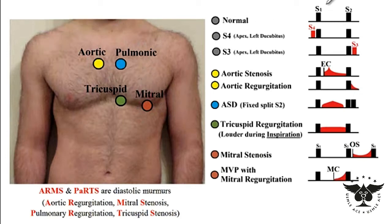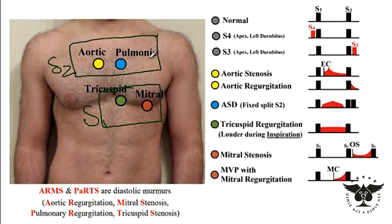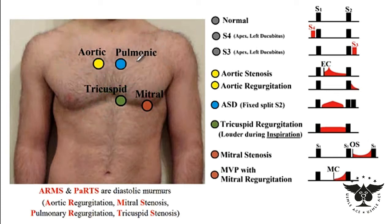With the normal heart sound, there are two different components. S1 corresponds to the closure of the mitral and tricuspid heart valves. S2 heart sound is associated with the closure of the aortic and pulmonic heart valves. Since S2 is composed of both, it's referred to as A2 for its aortic component and P2 for its pulmonic component.